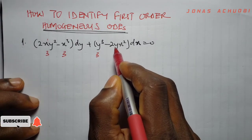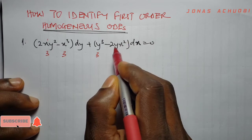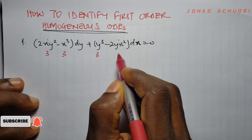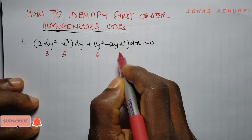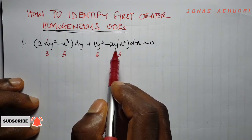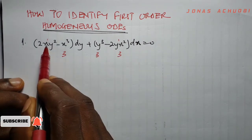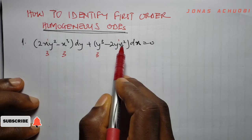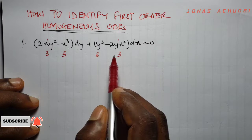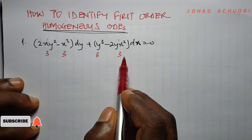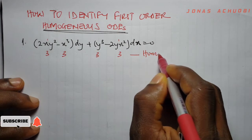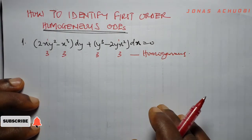And the last term, 2yx², y has a degree of 1 and x has a degree of 2, so the sum of degrees is again 3. There are four terms in this first-order ODE — term 1, term 2, term 3, and term 4 — and each term is of degree 3. Once you spot this in a differential equation, that equation is already homogeneous.